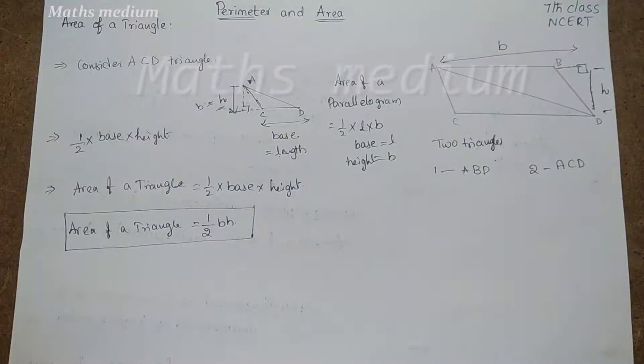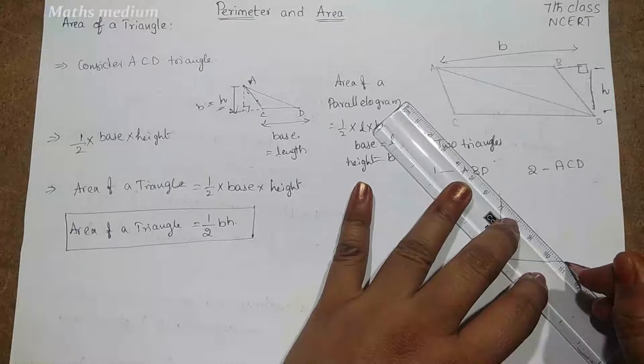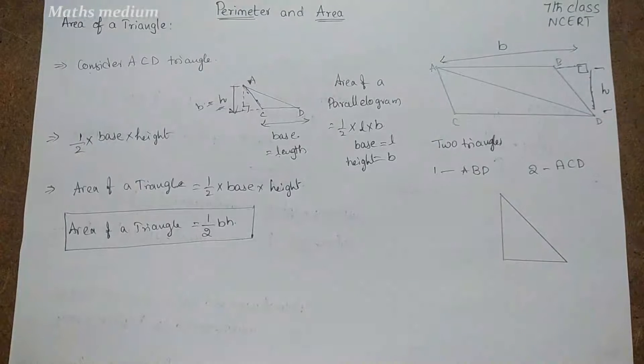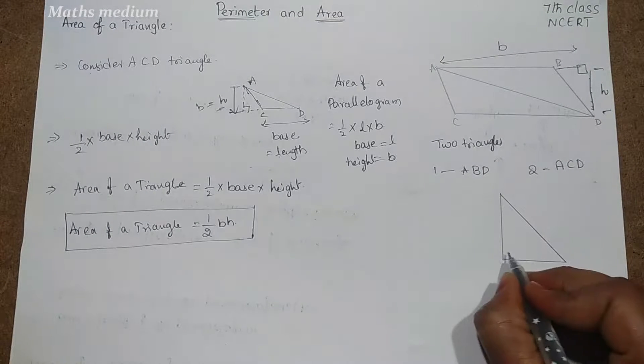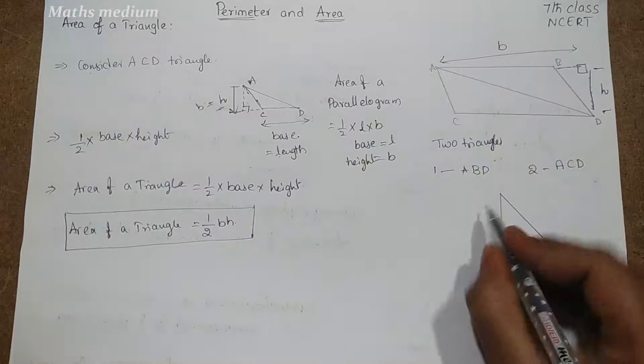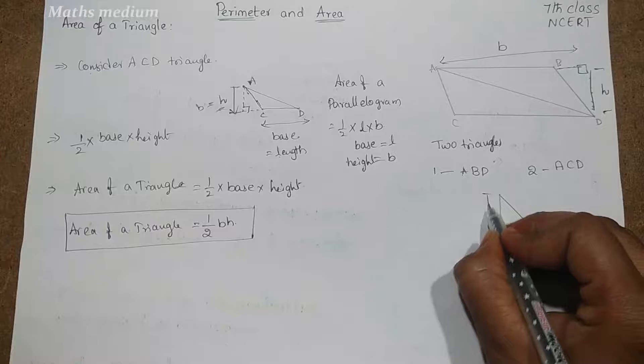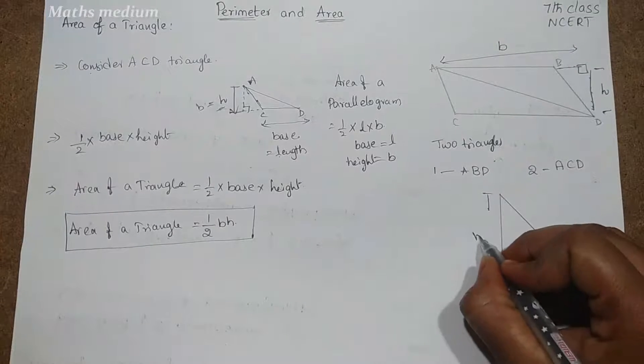If you take another triangle like this, so this is a right-angle triangle. So here no need to bother about the height if you take a scale and choose this height.